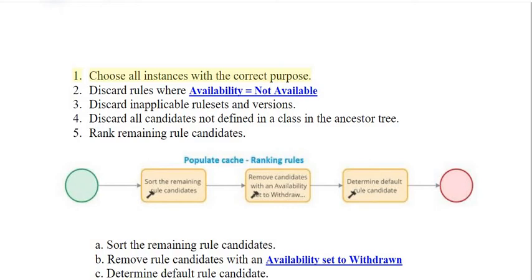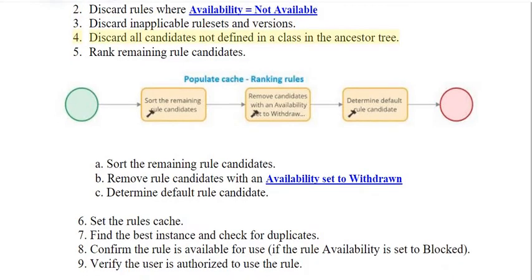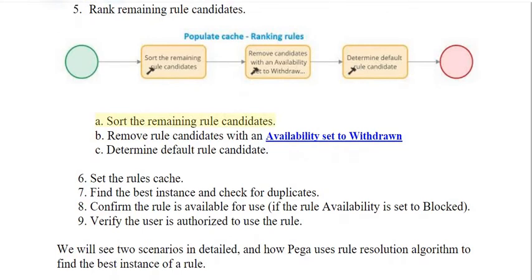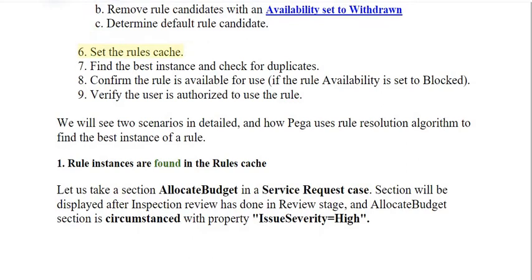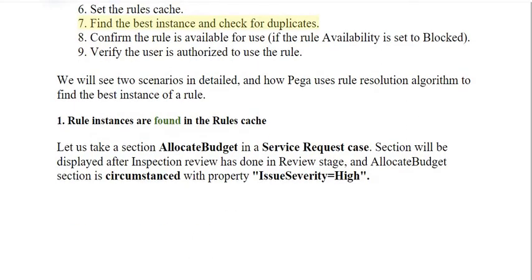The steps for populating the rules cache are: 1) choose all instances with the correct purpose; 2) discard rules where availability equals not available; 3) discard inapplicable rule sets and versions; 4) discard all candidates not defined in a class in the ancestor tree; 5) rank remaining rule candidates — which includes: a) sort the remaining rule candidates, b) remove rule candidates with availability set to withdrawn, c) determine default rule candidate; 6) set the rules cache; 7) find the best instance and check for duplicates.